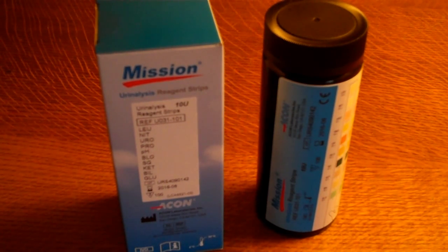The test includes 10 different parameters including leukocytes or white cells, nitrite, urobilinogen, protein, pH, blood, specific gravity, ketones, bilirubin, and glucose.